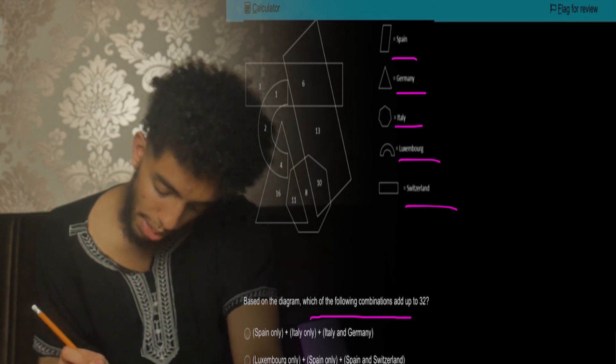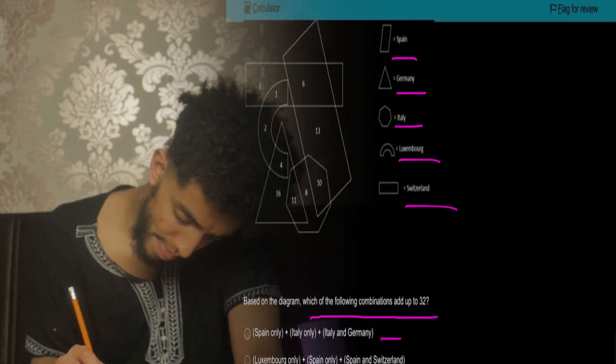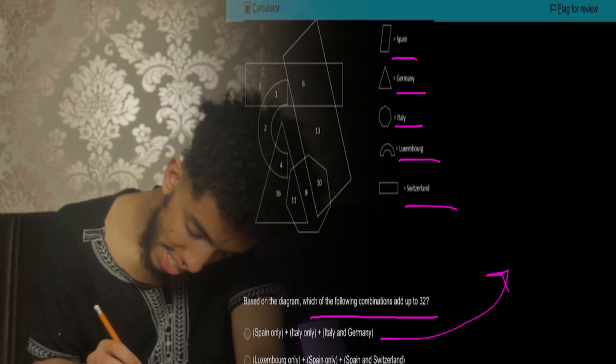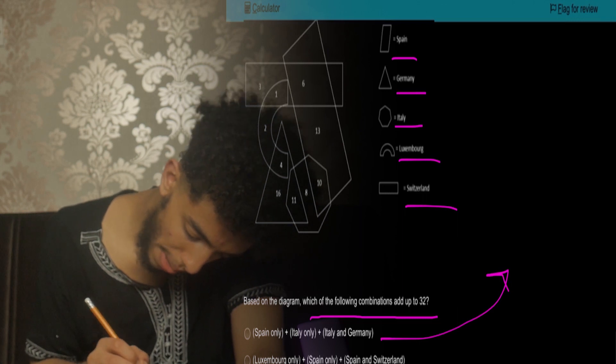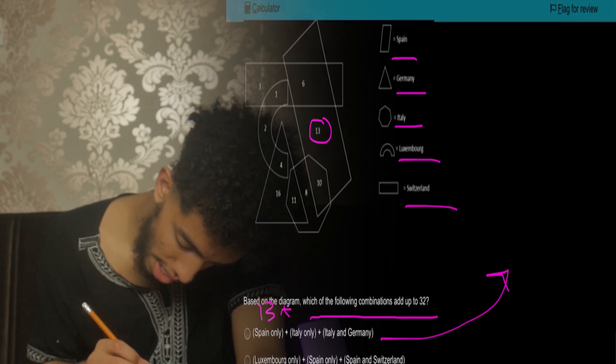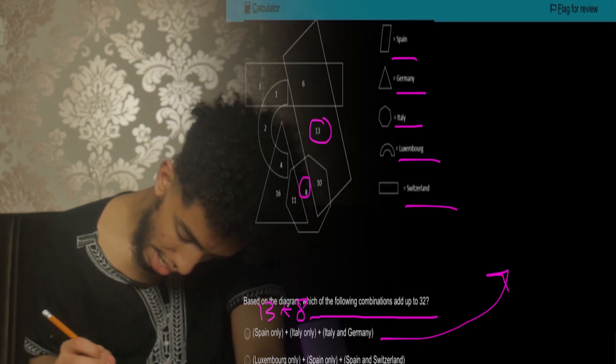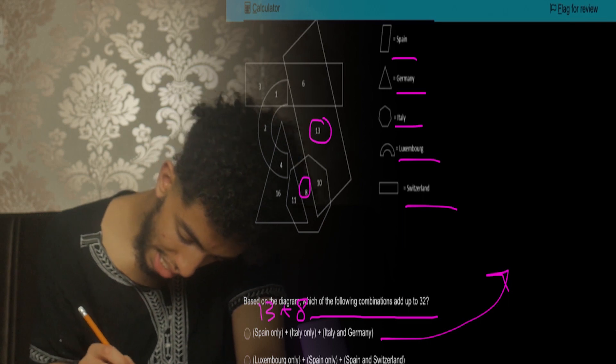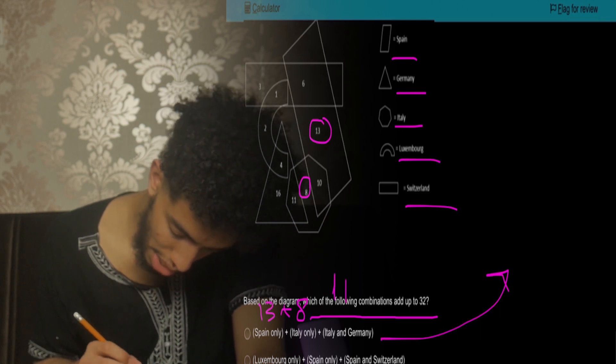So based on the diagram, which of the following combinations add up to 32? Let's go. If we want Spain alone, Spain is that rhombus shape or parallelogram, Spain alone is 13. So 13, let's add that on. 13 plus Italy alone. Italy is the hexagon, that's 8, as we can see here. Italy and Germany: Italy hexagon and where's Germany? The triangle, so 11. And we add that together, we get 19... 32. And hence we find the right answer almost instantly. So 21 plus 11 is equal to 32.